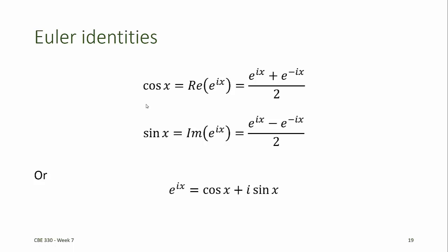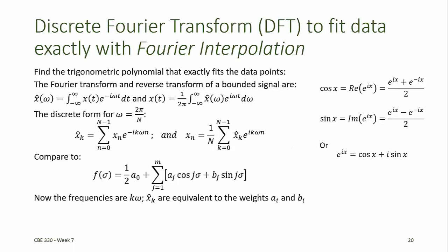Recall that the Euler identities represent the sine and cosine functions as sums of complex exponentials. The discrete Fourier transform is a method of fitting data exactly using what's called Fourier interpolation. The objective is to find a trigonometric polynomial that exactly fits a set of data points, and this is derived using a discrete form of the continuous Fourier transform.